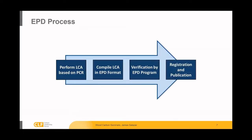Once an LCA has been completed based on a set of what we call product category rules, the LCA is then compiled into an EPD. The EPD is submitted to an EPD program operator — ASTM, Underwriters Laboratory, NSF. The current wood products EPDs are verified through Underwriters Laboratory, who verify all of the background information with a neutral third party and register and publish those EPDs, which are then valid for up to five years.